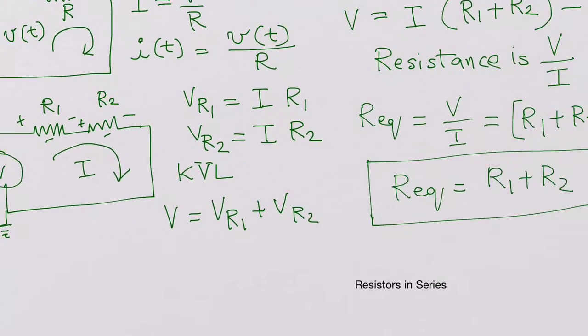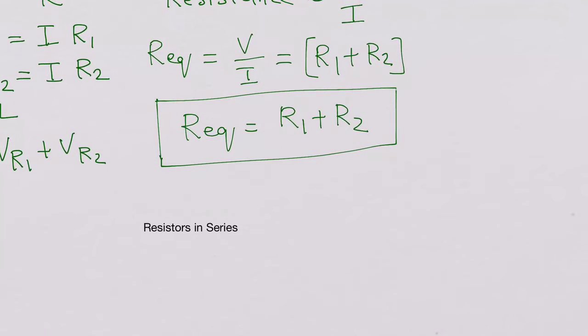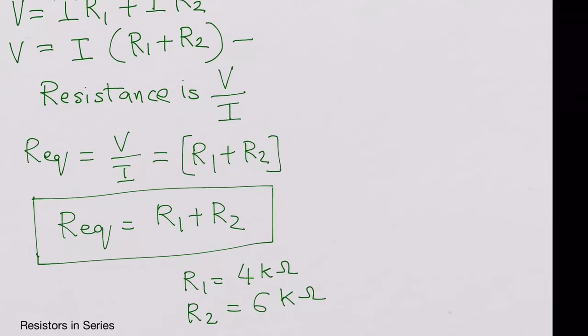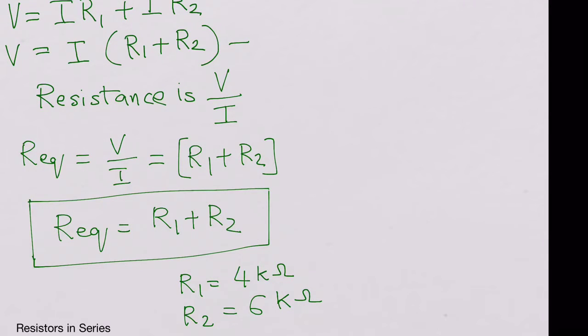So now for example, you have R1 is 4 kilohms and R2 is 6 kilohms. Assume V is 1 volt.